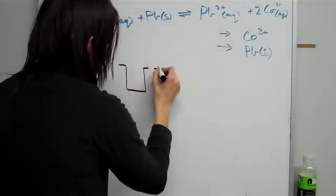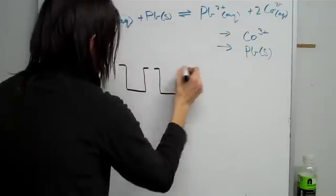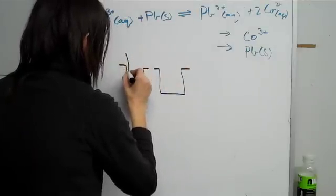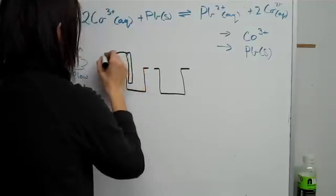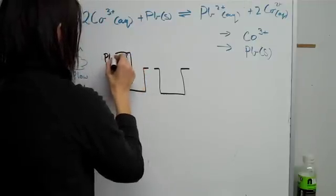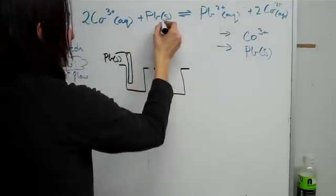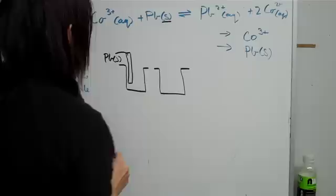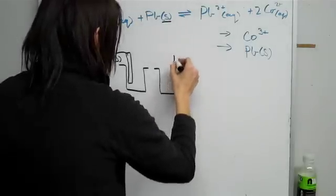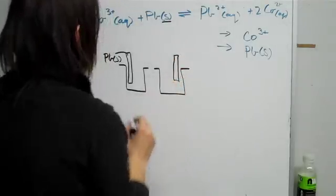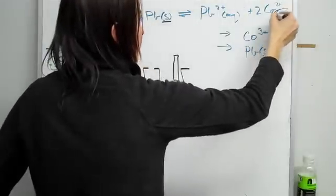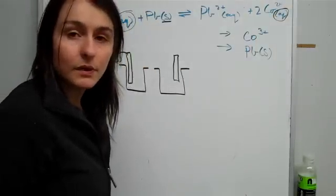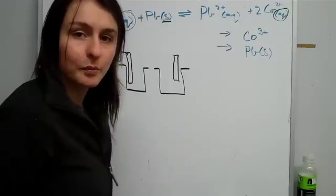Here we have... Now, one of these electrodes is just going to be lead. Because as you can see, lead is in solid form. And the other electrode is going to be interesting because this is in aqueous and this is in aqueous.